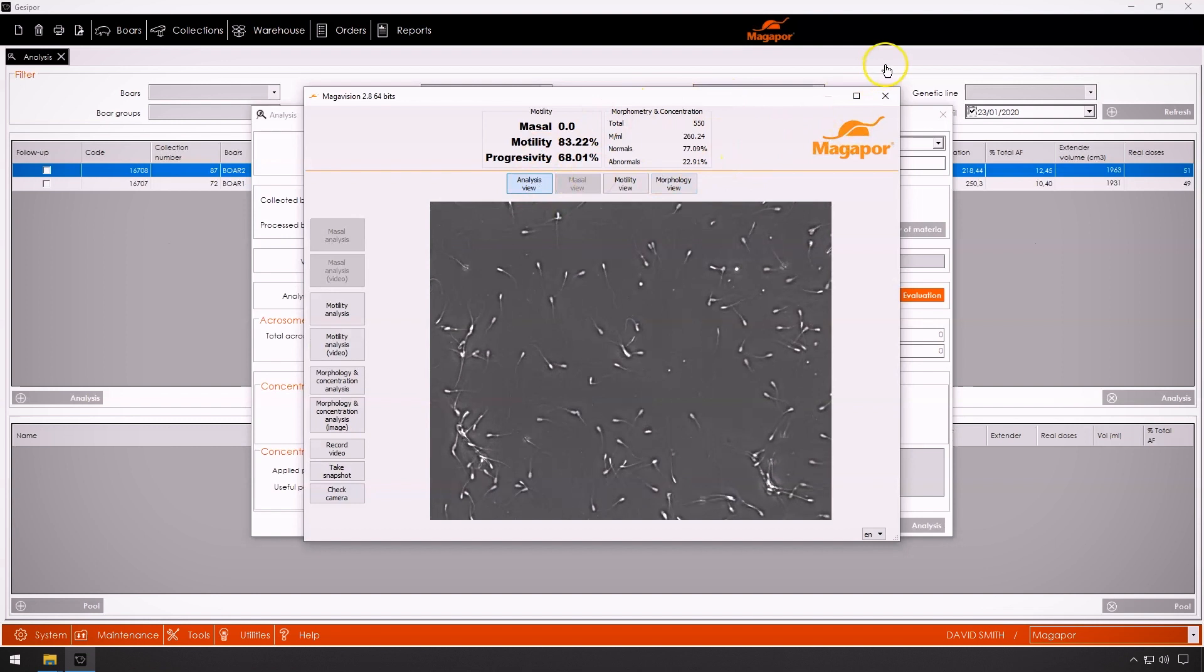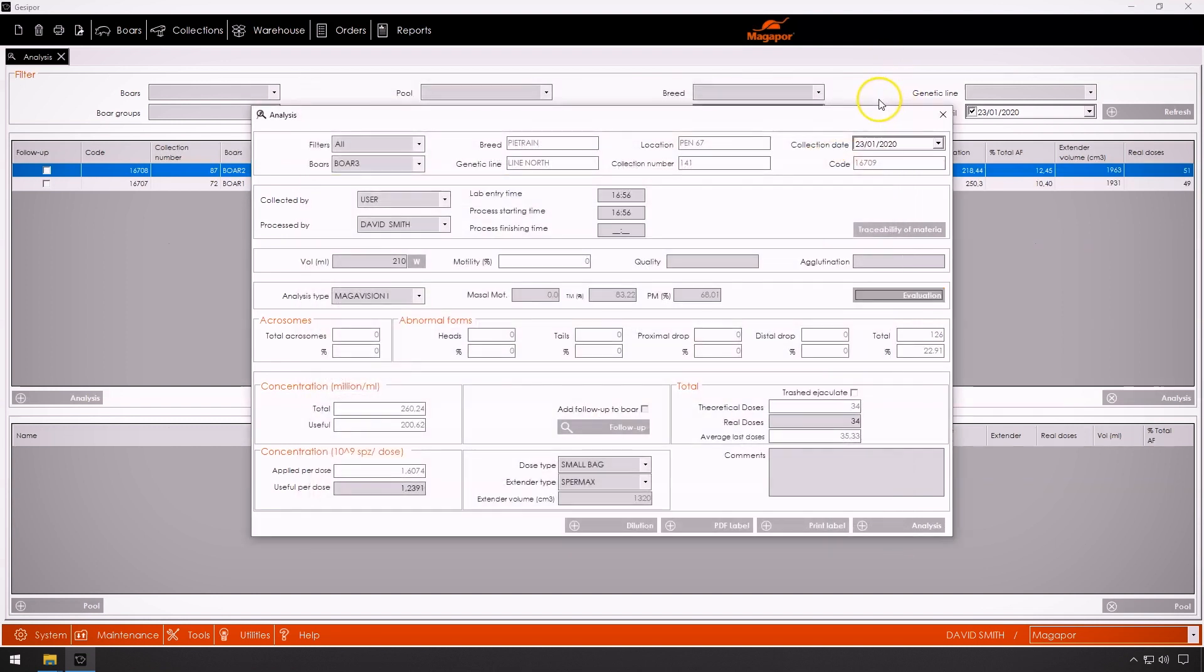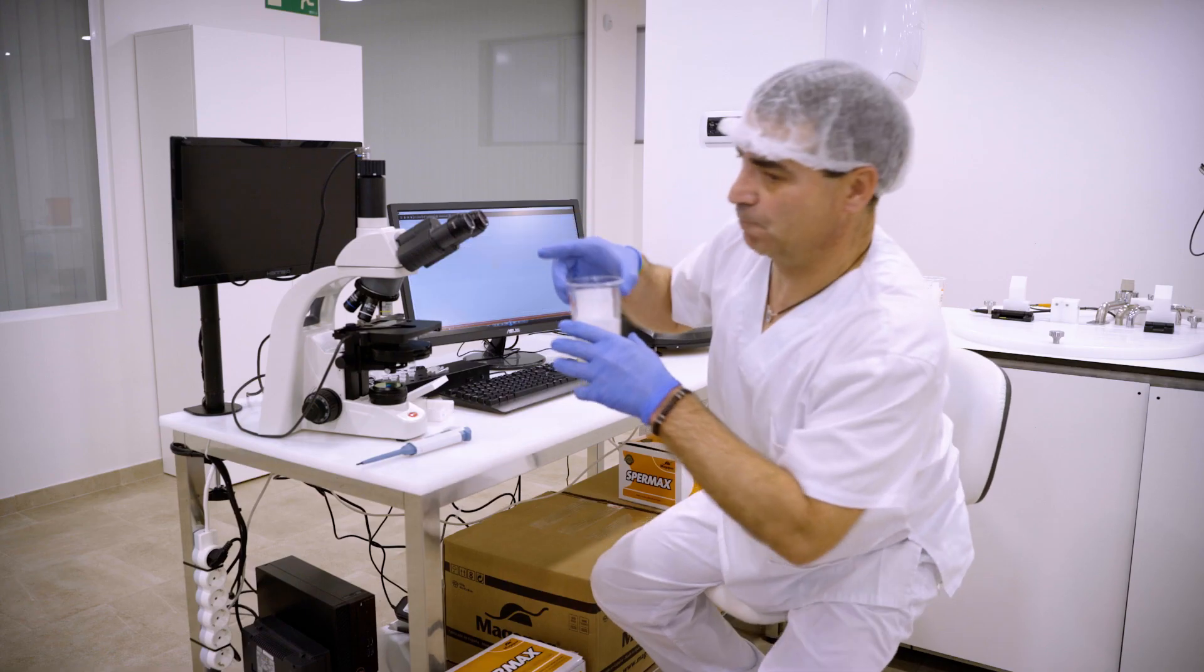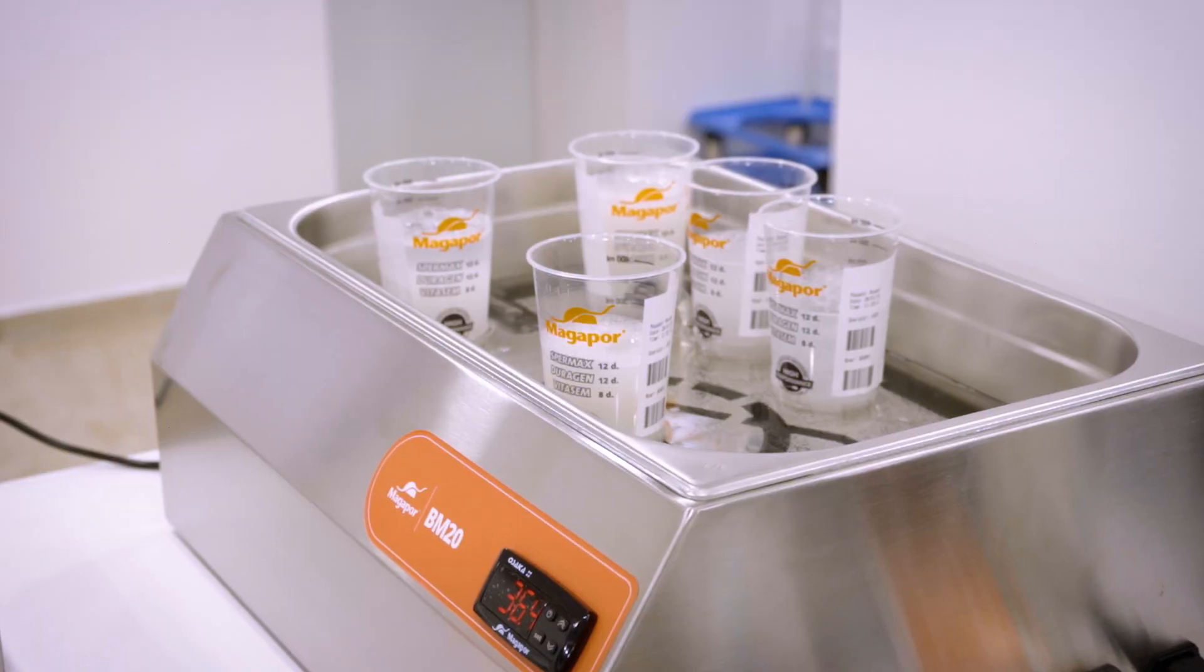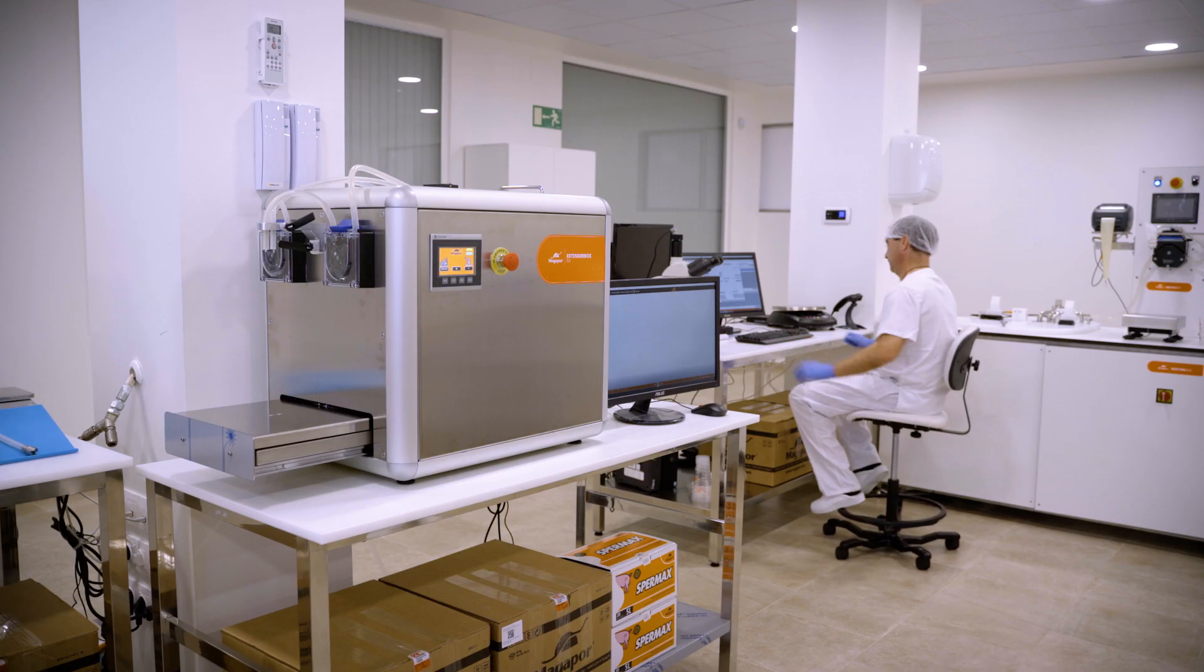Once the analysis is completed and depending on the parameters already configured, the information regarding the quality of the ejaculate analyzed passes to Gesipor, which shows the number of doses to be taken and the volume of dilution necessary and sends this information to the dilution and packaging unit.